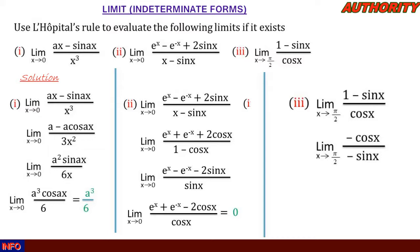The negatives cancel, giving us lim as x approaches π/2 of cos(x) / sin(x). Plugging in π/2: cos(π/2) = 0 and sin(π/2) = 1, so we get 0/1 = 0. We have used L'Hôpital's rule and evaluated all three limits. Please keep practicing and let's take more examples. Thank you.